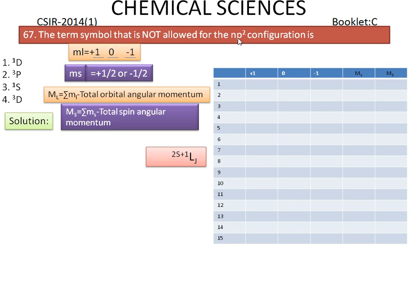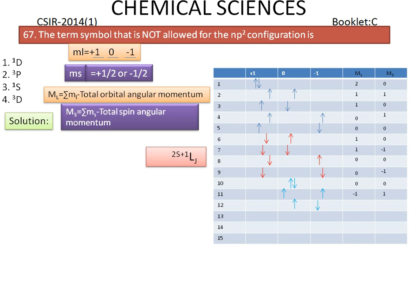First, the 2p electrons are arranged in the ml = +1 state, where one electron is spin up and another is spin down, giving a total MS value of 0. The capital ML value is calculated by summation of ml: 1+1 = +2. Similarly, we introduce the two electrons with different spins arranged in different possibilities across the p orbitals.